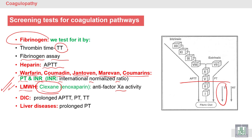In disseminated intravascular coagulation (DIC), we find prolongation of all tests — aPTT, prothrombin time, and thrombin time — along with decreased platelets, increased fibrin degradation products (FDPs), and decreased fibrinogen. In liver disease, we find prolongation of prothrombin time and decreased levels of most coagulation factors.